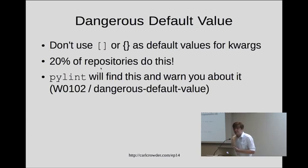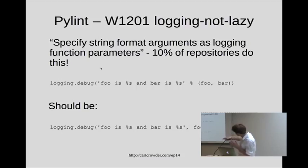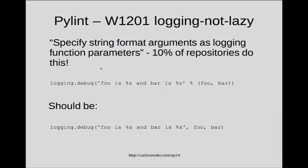Here's another one I really learned. If you call logging.debug with a string and you want to see the values of foo and bar, you might interpolate the string with formatting parameters and then call logging.debug. It turns out this is the wrong way to do it. What happens is you interpolate the string first, and if your logging level is info, warning, or above, that logging.debug call is basically a no-op — but you've already wasted time doing the string interpolation. You can pass foo and bar as arguments directly to logging.debug and it will interpolate the string for you. Ten percent of repositories do this the wrong way.